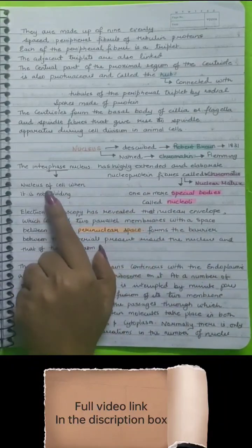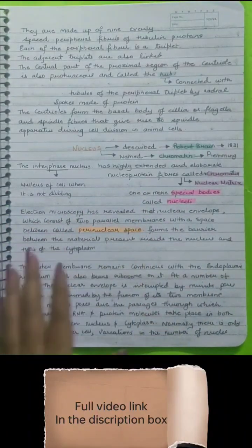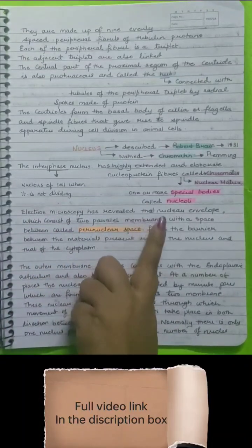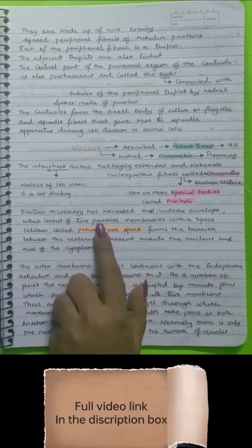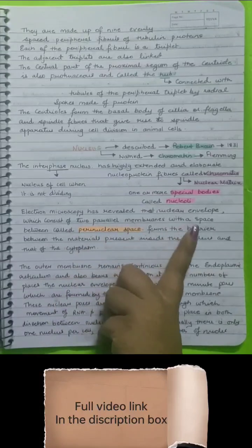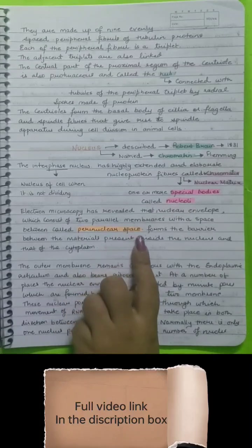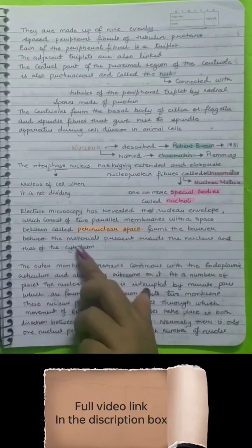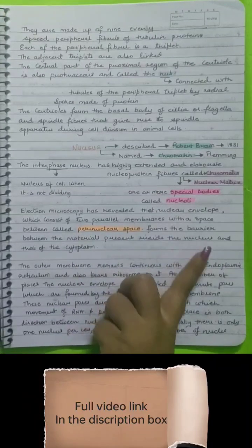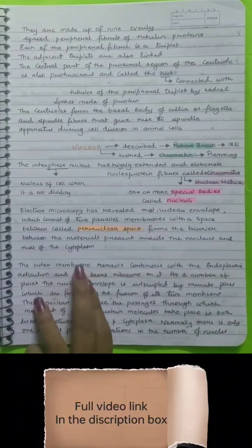Interphase is the nucleus of a cell when it is not dividing. Electron microscopy has revealed that the nuclear envelope consists of two parallel membranes with a space called perinuclear space, forming the barrier between materials inside the nucleus and the cytoplasm.